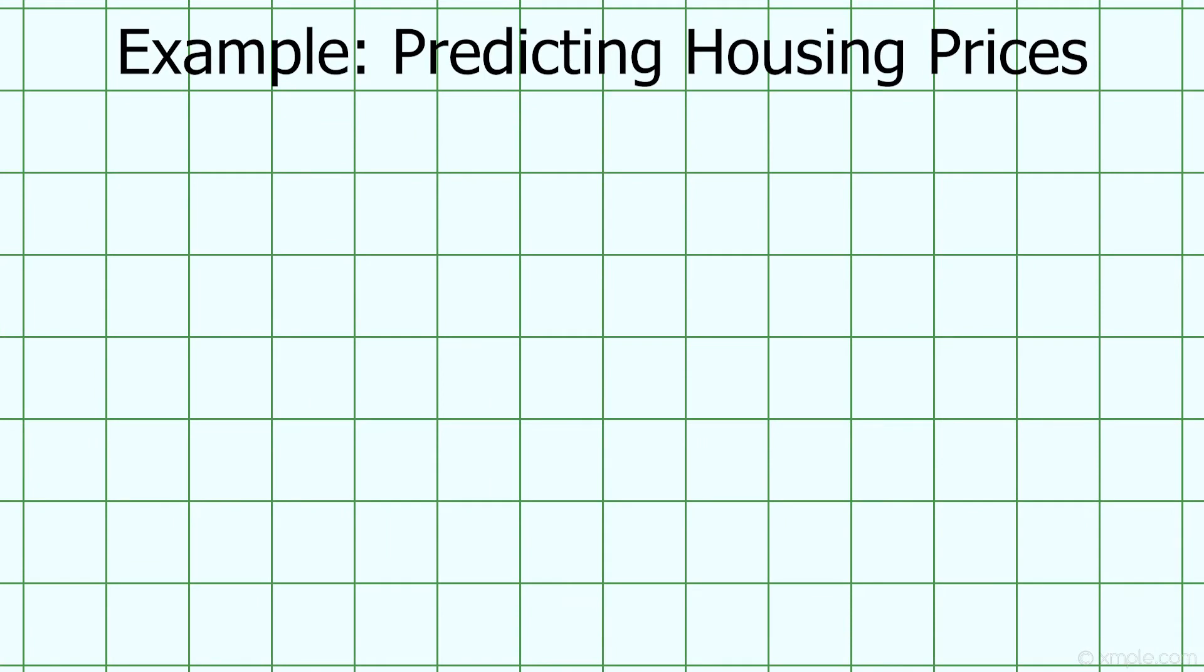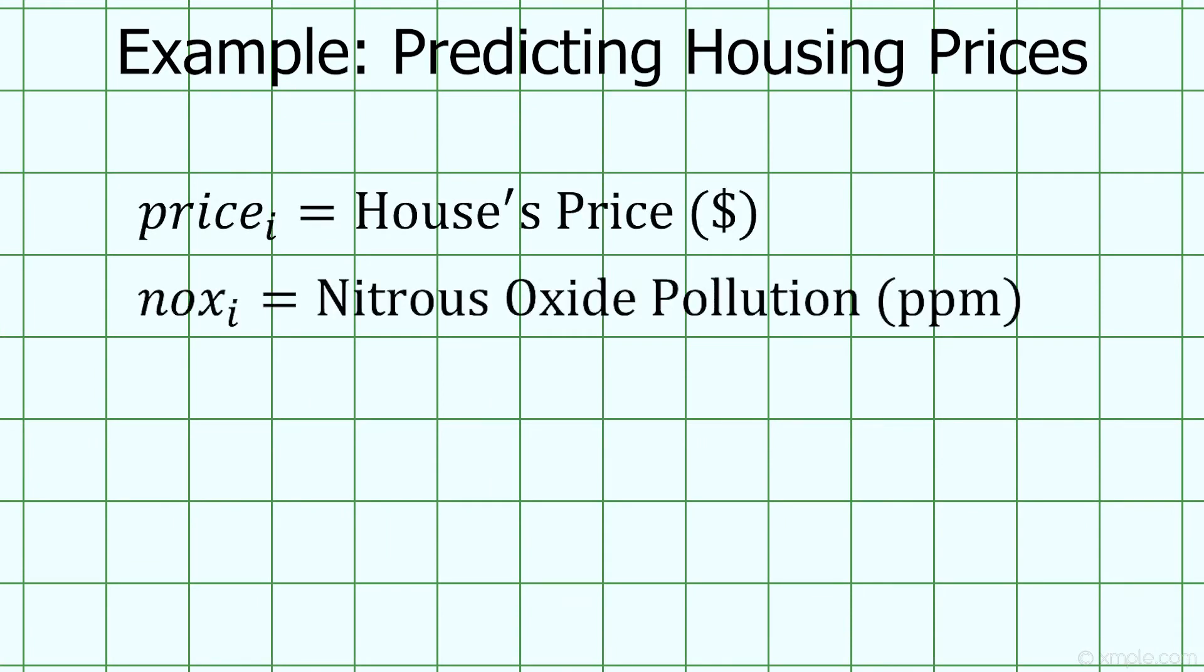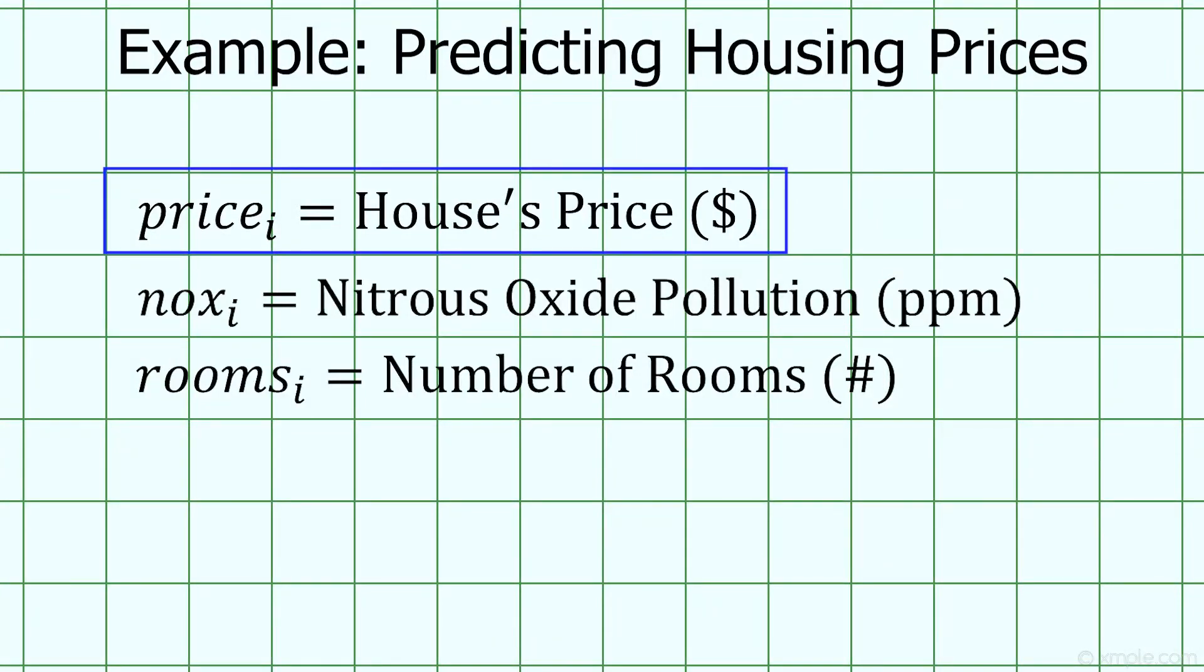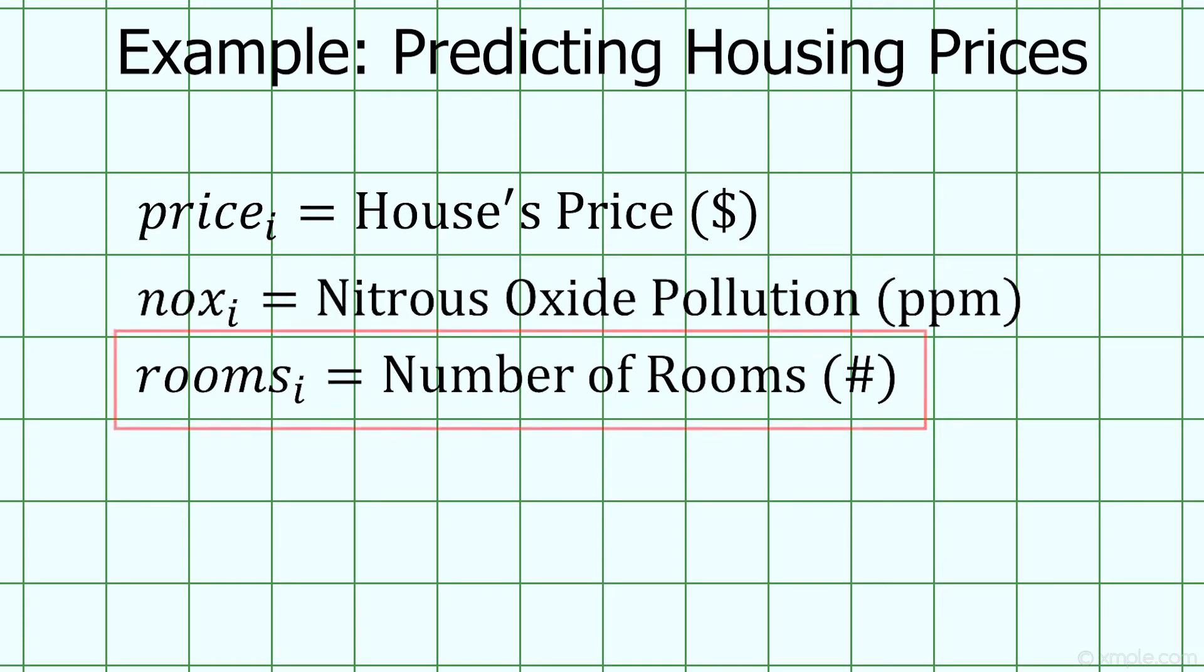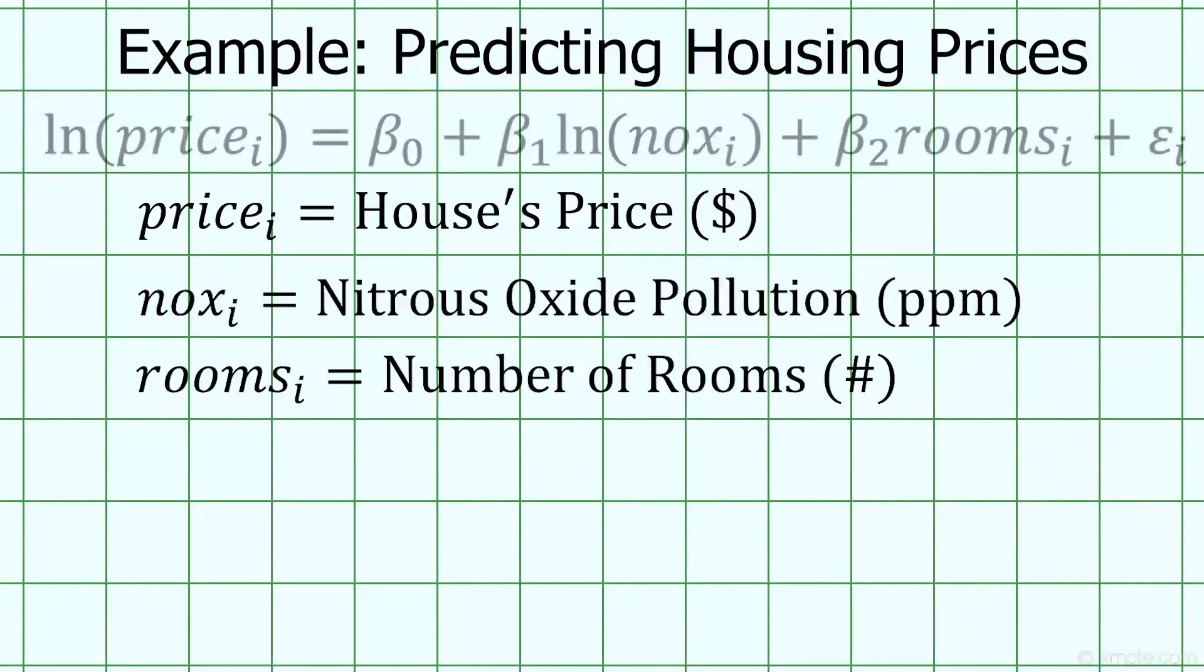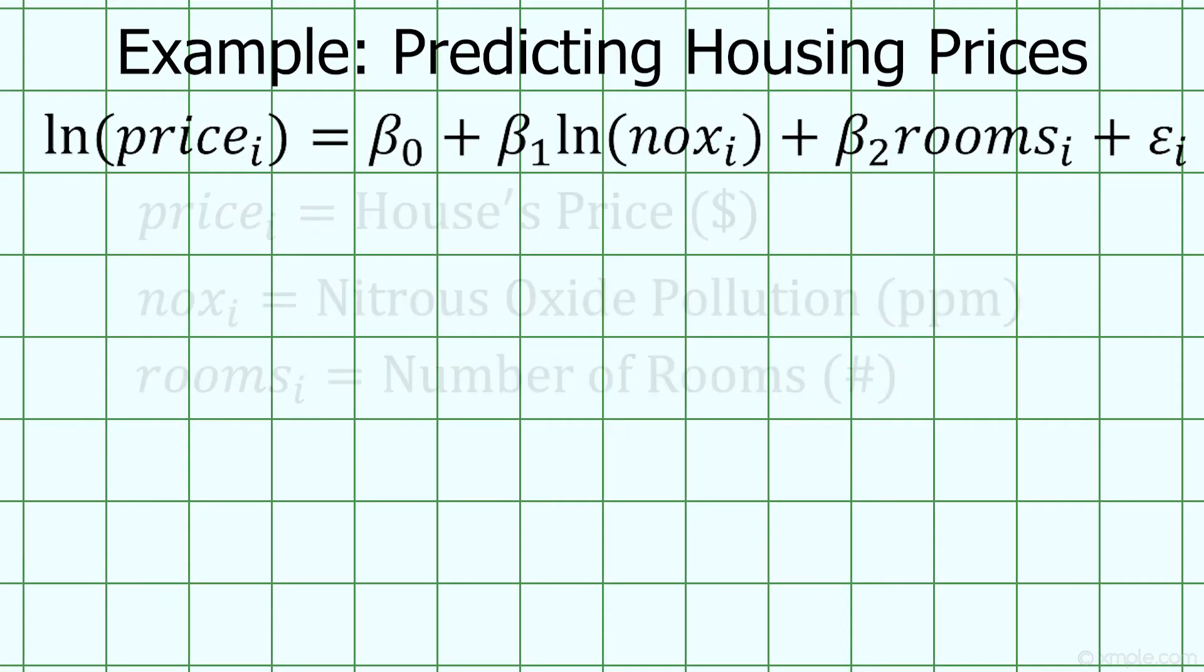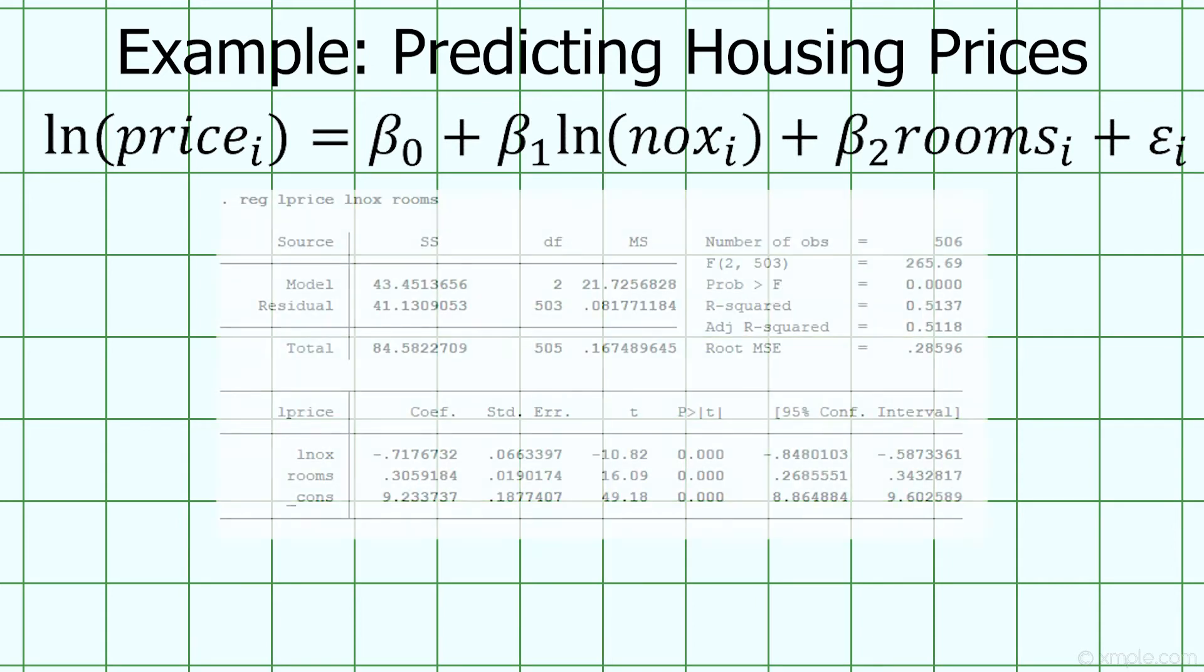We've got three variables. A house's price in dollars, nitrous oxide concentration in parts per million, and the number of bedrooms that the house has. We probably want to take the natural log of price, since price is never negative and there's lots of variation. Ditto with our measure of pollution, nitrous oxide. Our room variable, on the other hand, is probably better left in levels, since there's not as much variance in the number of bedrooms. When we run this regression, we get these results.